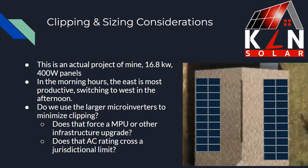Let's look at a case study — an actual project from last year: a 16.8 kilowatt system using 400-watt panels. In the morning, the sun is to the east, so the east-facing panels are more productive. As the sun rises, you get shared production, and in the afternoon, the west-facing panels are more productive. So we're faced with a conundrum: do we use larger microinverters to make sure we're harvesting all of that energy and minimizing clipping? Does that force a main panel upgrade or some other infrastructure upgrade? What is the trade-off?